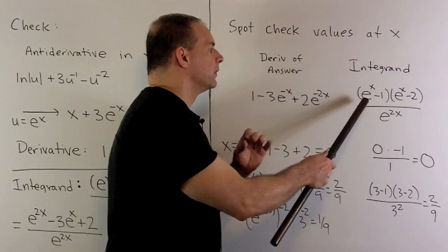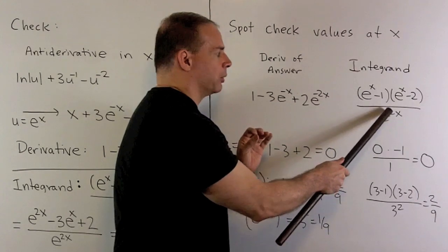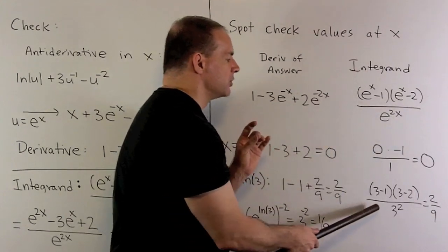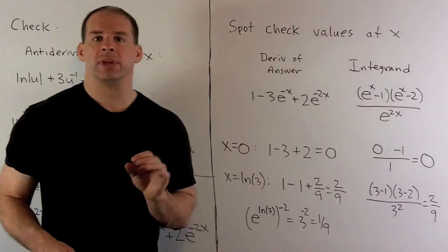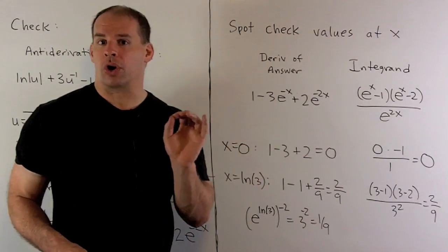On the other side, here we'll have 3 minus 1, 3 minus 2, divided by 9. You push the 2 out of the exponent. So that leaves me with the 2 ninths also, and we agree at that point. So we have a little bit of evidence that suggests that we did our work correctly. Thanks, guys.